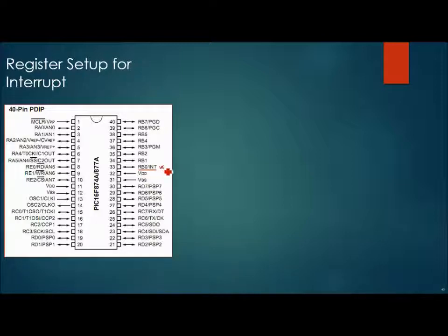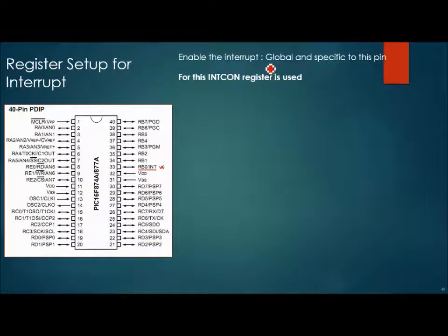Now we know that to use the interrupt it has to be enabled, and it has to be enabled from two levels: global level and the individual level. To enable or disable we need to set few bits of registers associated with the interrupt. In case of PIC16F877A the name of the register is INTCON.